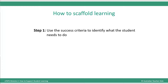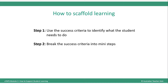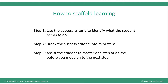Step 1 is to use the success criteria to identify what the student needs to do. Step 2 is to break the success criteria into mini steps, and step 3 is to assist the student to master one step at a time before you move on to the next step. Let's look at these one at a time.